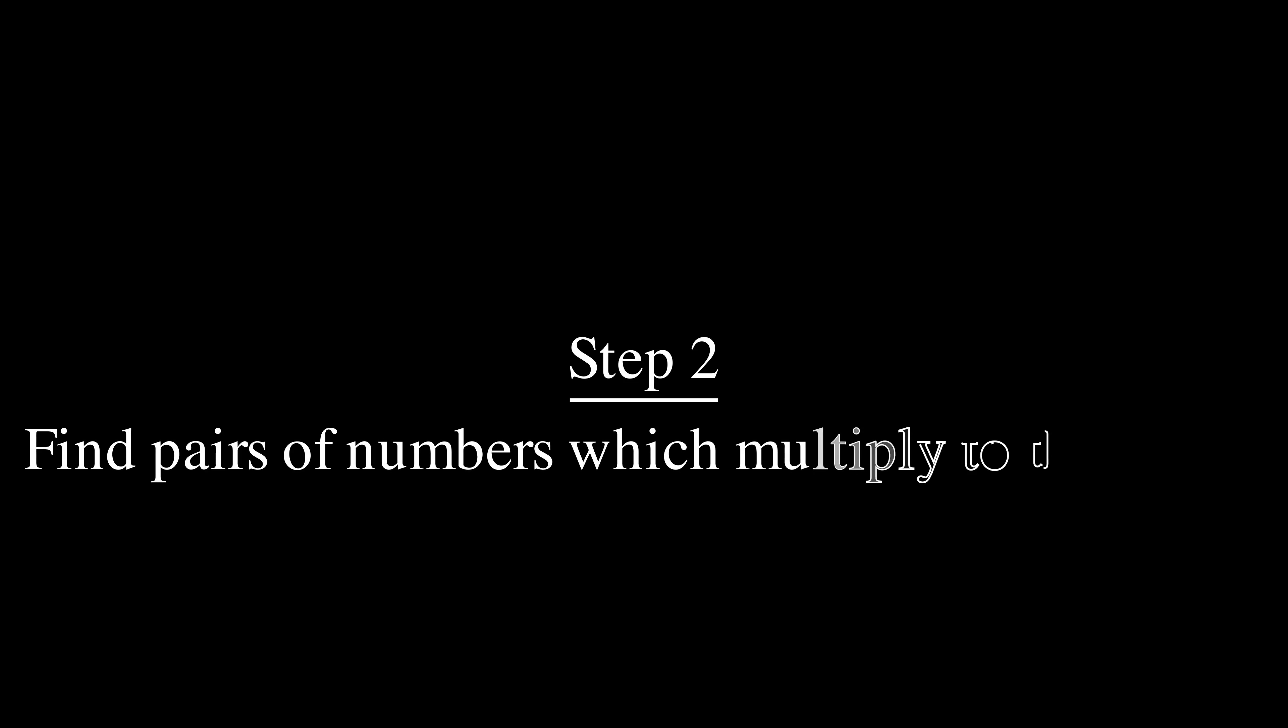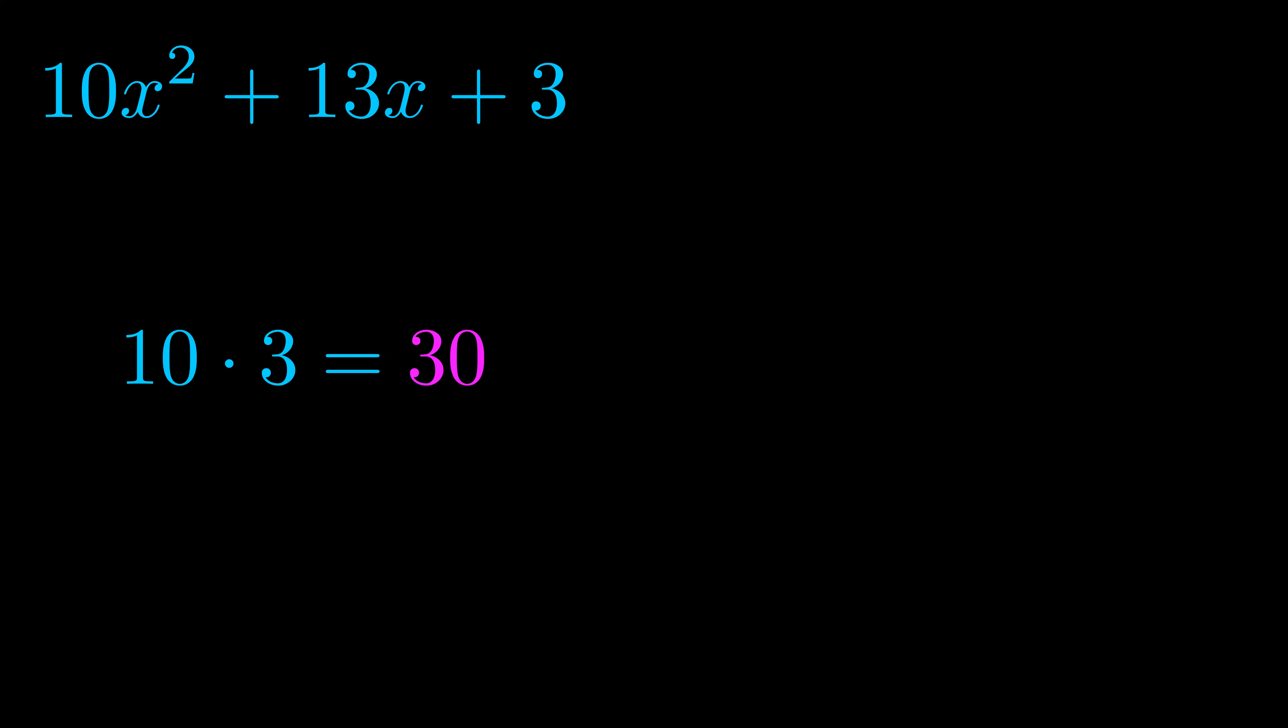Step two is to try to find all of the pairs which multiply to this number. Now turns out you don't really need to find all of them but go ahead and write down as many numbers as you can that multiply to the magenta value for now. Pause the video and resume when you're ready to continue.